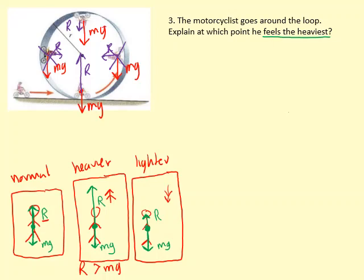Where does he feel the heaviest? Well, it's going to be in this situation here because that's when r is the biggest. The equation for that situation here is going to be r minus mg equals mv squared over r.